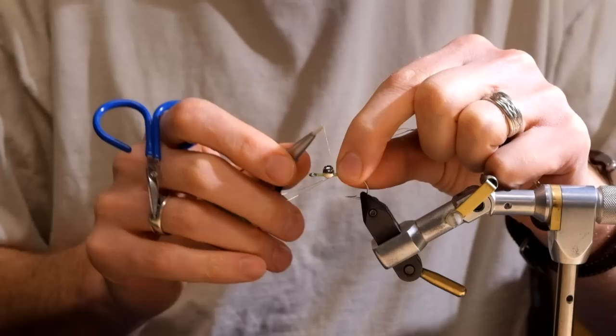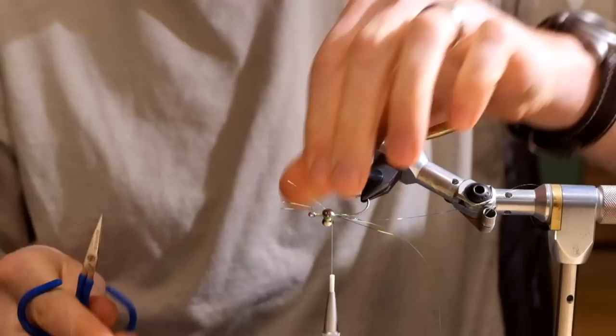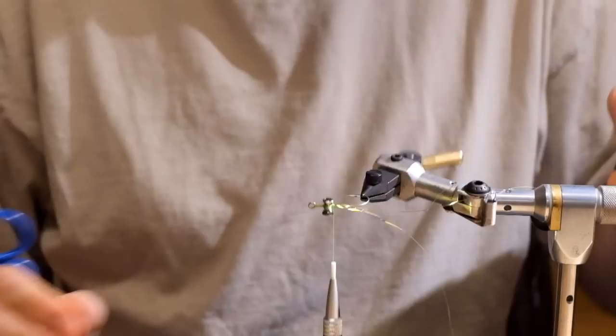Next we're gonna put in a Flashaboo body and the body is Chartreuse Mirage Flashaboo, which I'm gonna attach directly behind the eyes. Trim the ends.